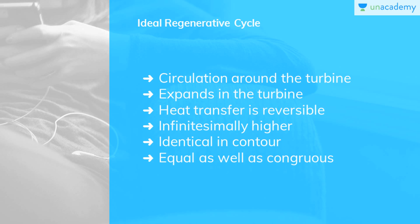Let's move on to the ideal regenerative cycle. Following the sterling cycle, in the ideal regenerative cycle, the condensate after leaving the pump circulates around the turbine casing so that heat is transferred from the vapor expanding in the turbine to the condensate circulating around it. It is assumed that this heat transfer process is reversible — that is, at each point the temperature of the vapor is only infinitesimally higher than the temperature of the liquid. Process 1 to 2 represents reversible expansion of steam in the turbine with reversible heat rejection to the surroundings in process 4 to 5.